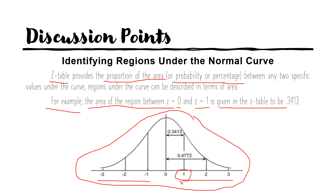As you can see, the values 0.3413 and 0.4772 are the areas mapped to Z equal to 1 and Z equal to 2 respectively. Using your table, if you're asked to find the area between 0 and Z equal to 2, that will be equal to 0.4772. If we're asked to find the area between Z equal to 1 and Z equal to 2, we subtract the area mapped to Z equal to 1 from the area mapped to Z equal to 2.